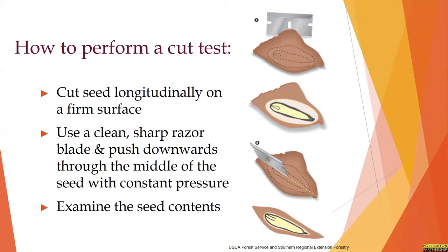To perform a cut test, you can cut longitudinally on a firm surface using a razor blade, pushing downwards to get a nice cross section to examine the contents of the seeds. There are also more field-friendly techniques, such as utilizing masking tape and nail clippers - sticking the seed to the tape and clipping at the seed, so the tape holds down part of the seed so both sides don't fly away. Not all seeds will be suitable for a cut test, as some are very small, and that's when you'll utilize more of those visual assessments.